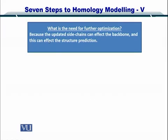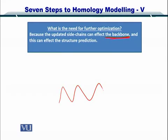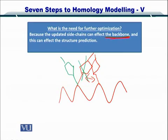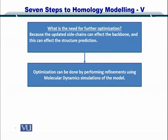Once you insert the rotamers and side chains you may want to evaluate your model for optimization, because the updated side chains can affect the backbone. For instance, if you have an interaction between two rotamers, this needs to be optimized by shifting one rotamer to another conformation and removing the clash. This optimization must be performed on the full backbone, and that can only be done in a simulation where you consider the entire backbone along with all the rotamers and loops.